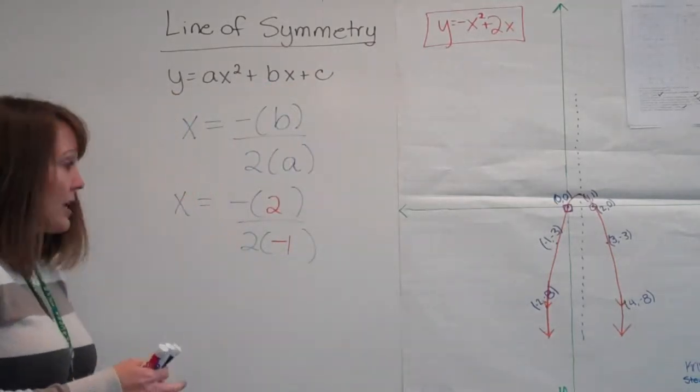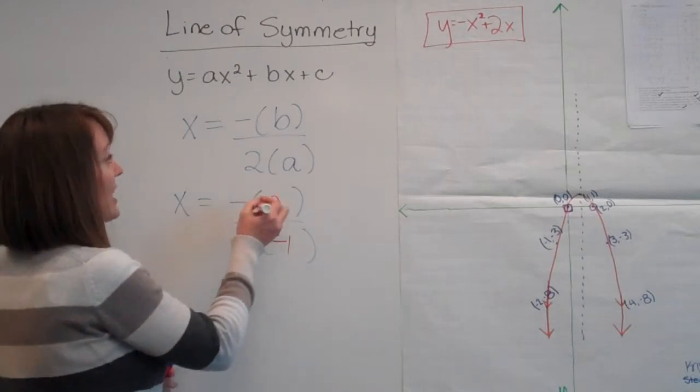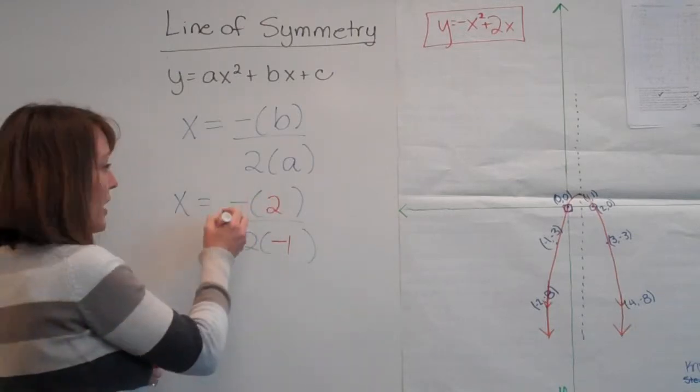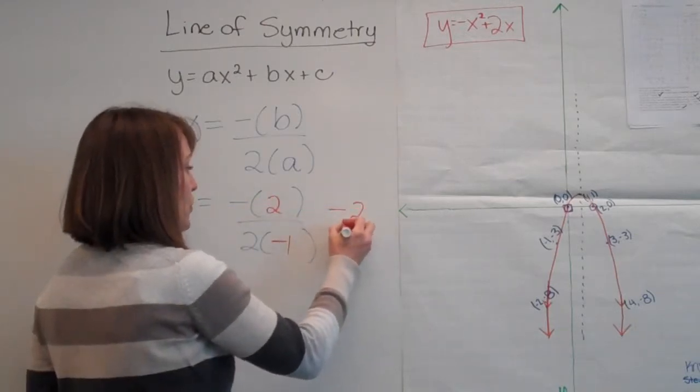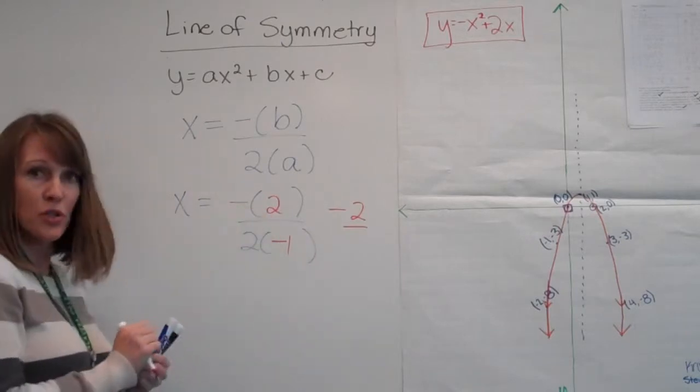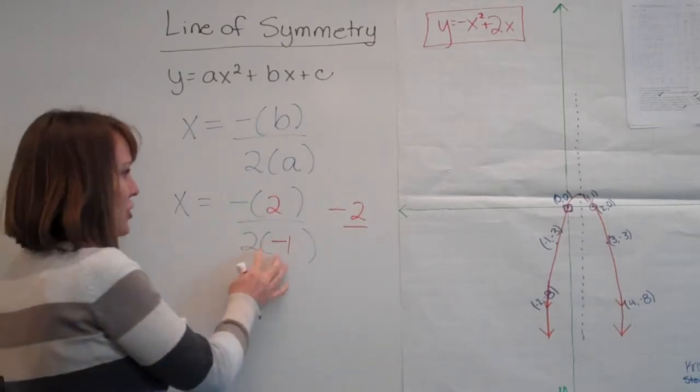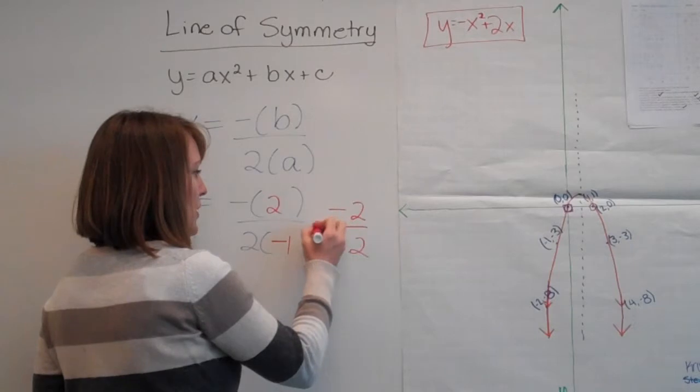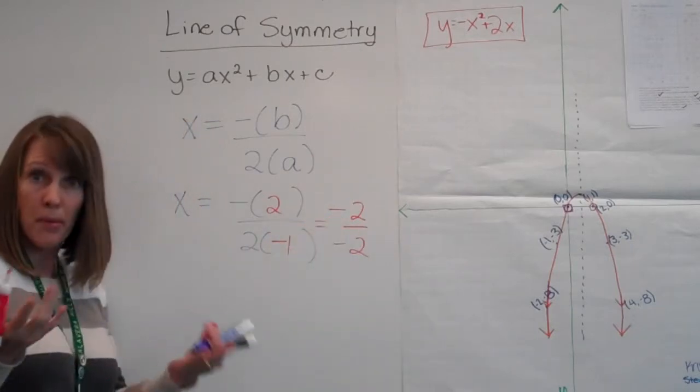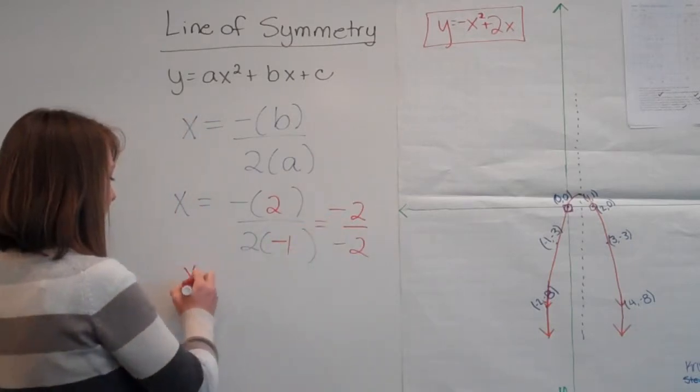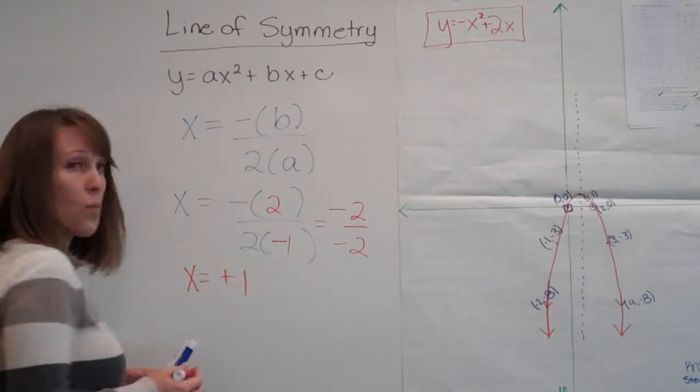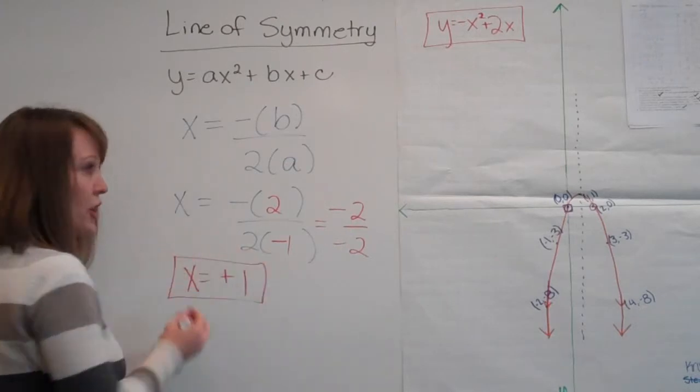Alright, so we have it set up, so this is really a negative times negative 1, right? So we're going to get negative 2. Negative 1 times 2 gives us our negative 2, and 2 times negative 1 is our negative 2 again. Negative divided by a negative is a positive, so we have x is equal to positive 1. That is the center of our graph.